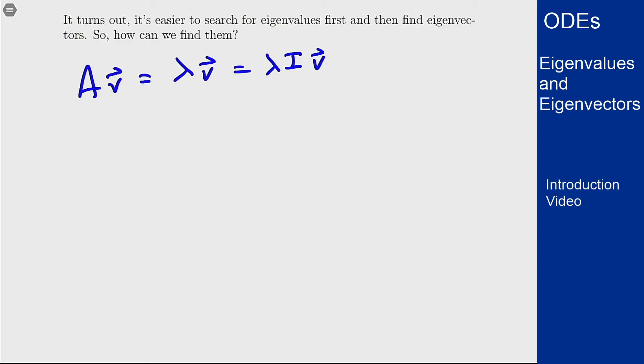Let me move the lambda I v to the other side and get that I want A minus lambda I all applied to vector v needs to be zero. Now this is a homogeneous system of equations so we can work out what's going on here. We can try to figure out when we have solutions to this homogeneous system. Now we know zero always works, but I'm looking for non-zero solutions to this equation. So what does that mean?